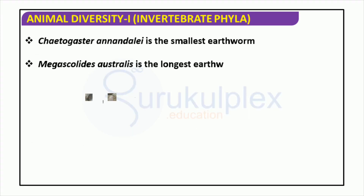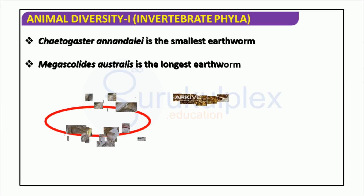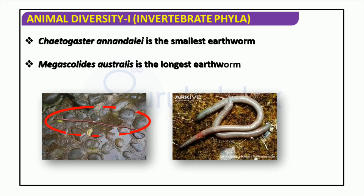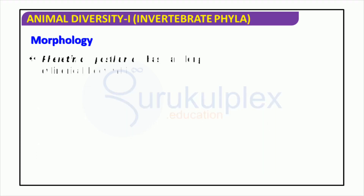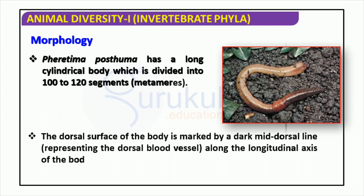Two species of earthworms, Chetagaster annandale and Megascolydes australis, illustrate the great variety of the animal kingdom. Chetagaster annandale is the smallest known species, measuring about 1 mm in length, whereas Megascolydes australis can reach 3 meters in length. Theratema posthuma stands out with its 100 to 120 segments which run along its cylindrical body. A dark mid-dorsal line, the dorsal blood vessel, runs along the longitudinal axis of the body. From this organism we can get a glimpse of the huge variety of animals that form the invertebrate phyla.